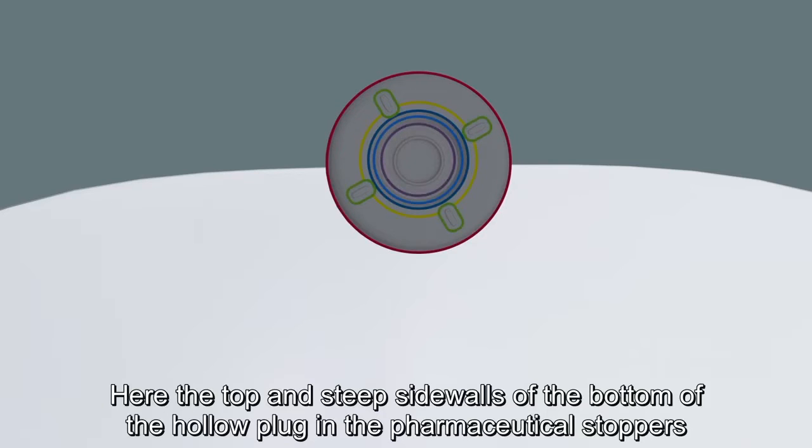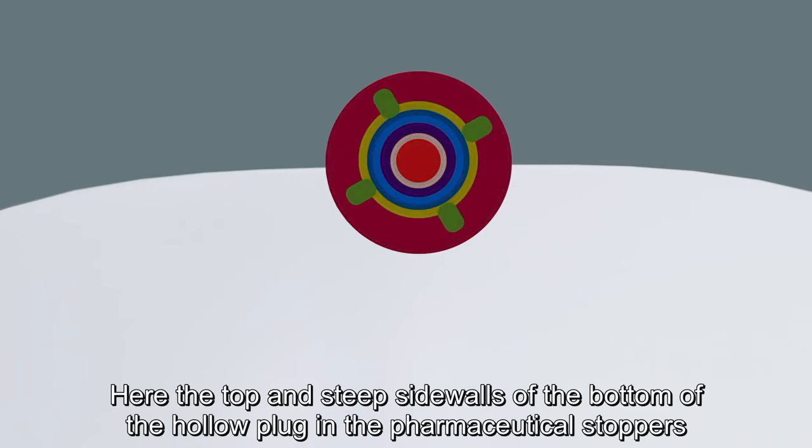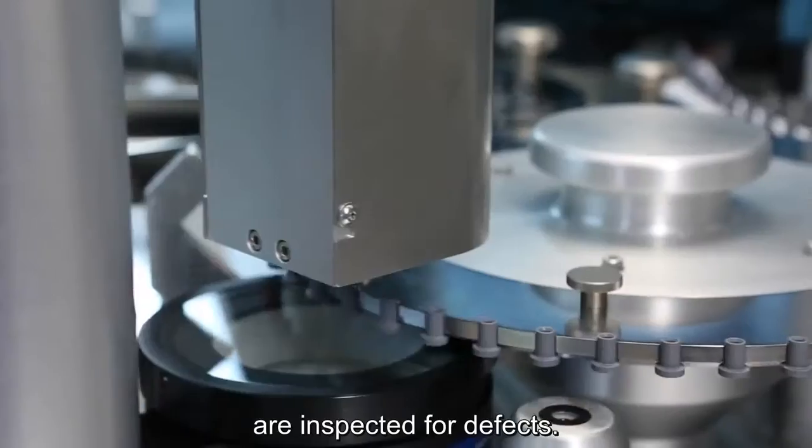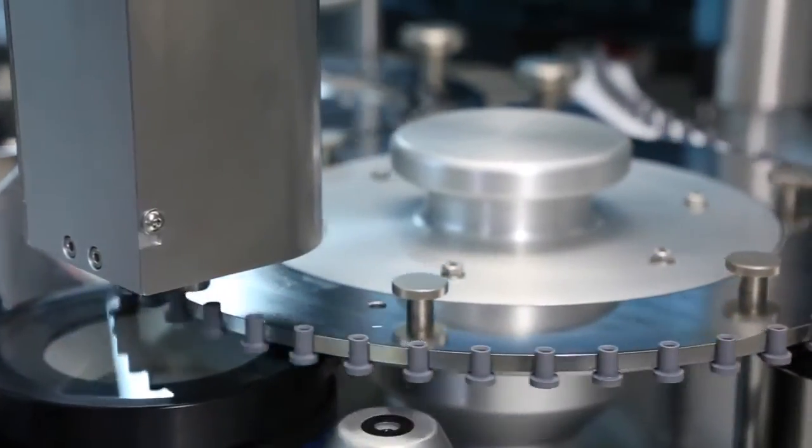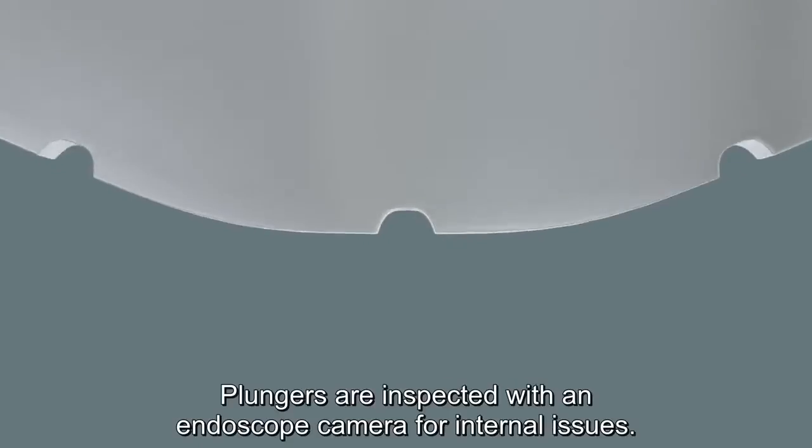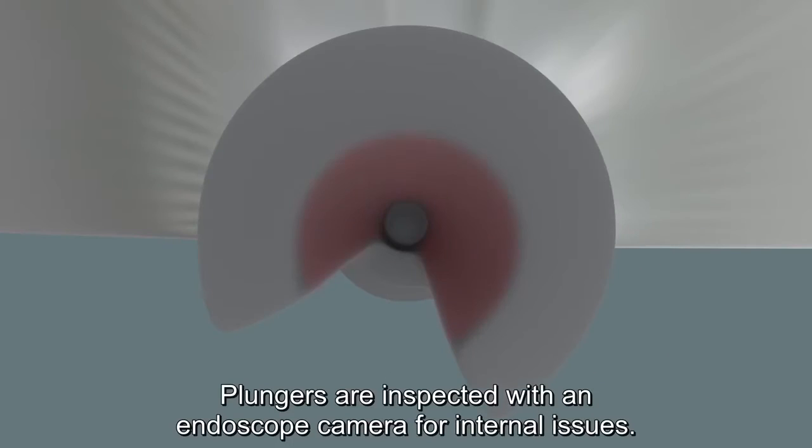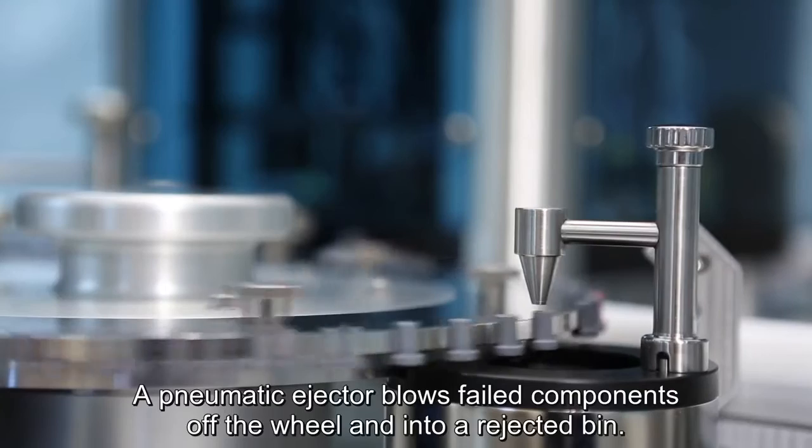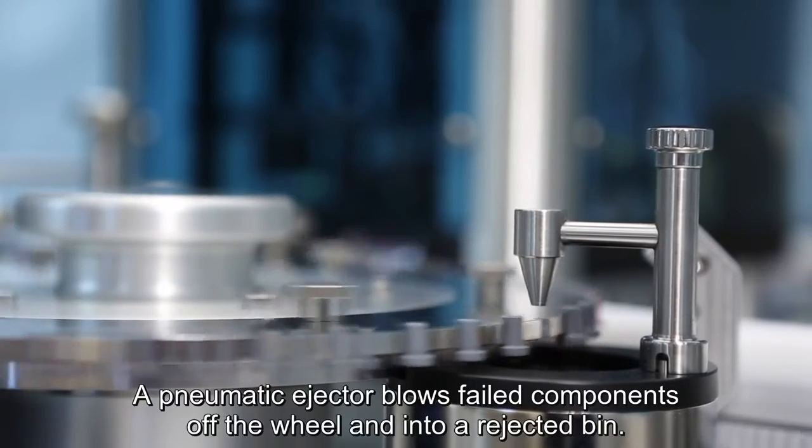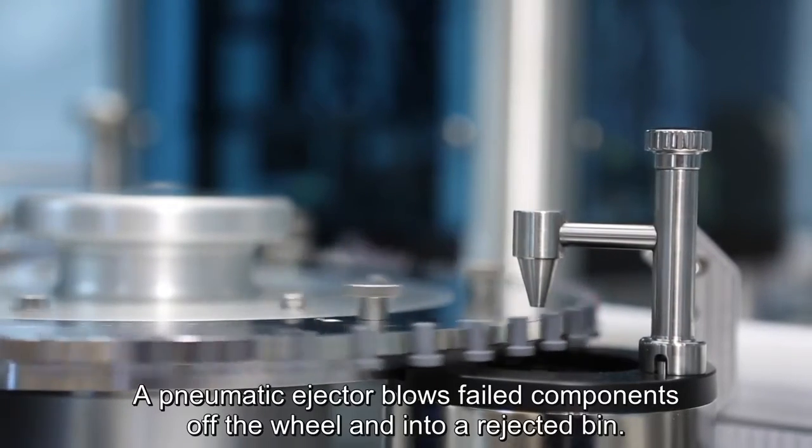Here, the top and steep sidewalls of the bottom of the hollow plug in the pharmaceutical stoppers are inspected for defects. Plungers are inspected with an endoscope camera for internal issues. A pneumatic ejector blows failed components off the wheel and into a rejected bin.